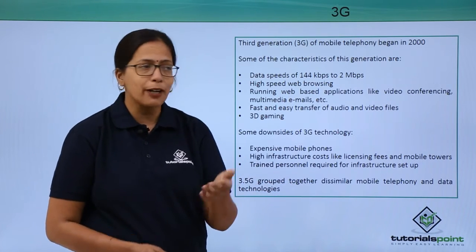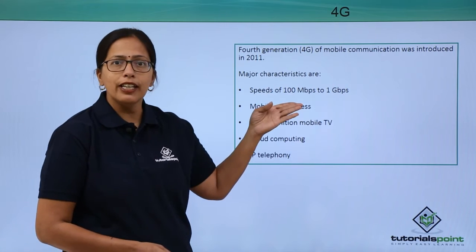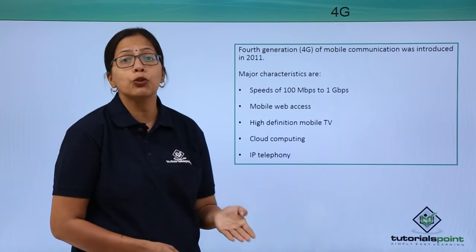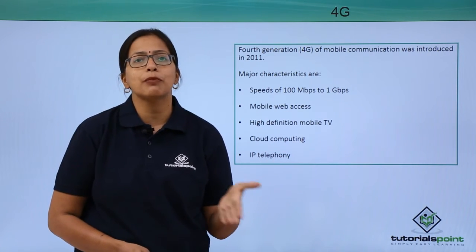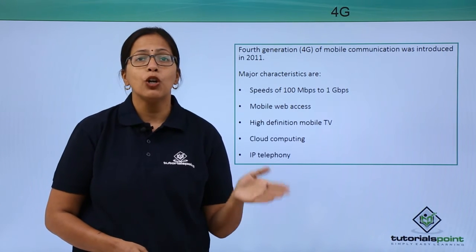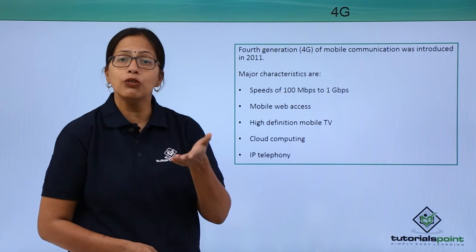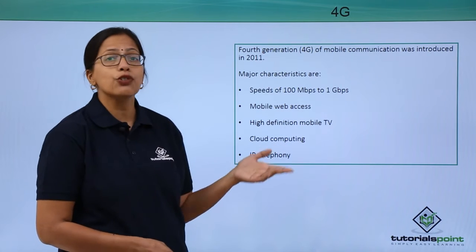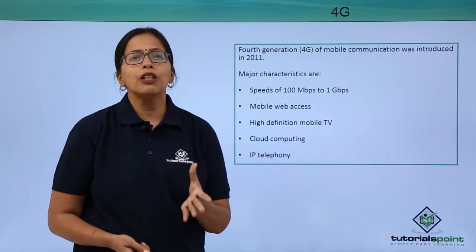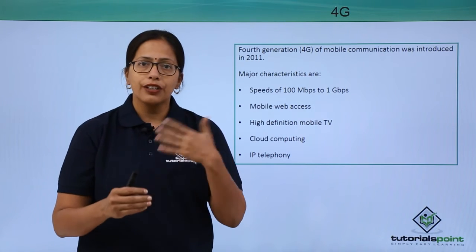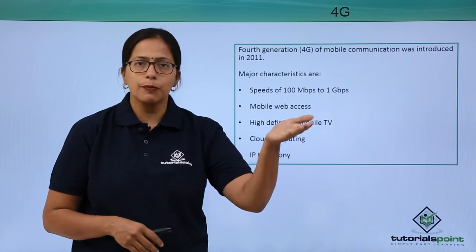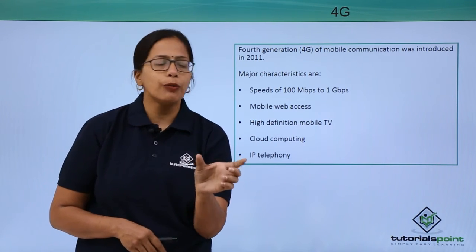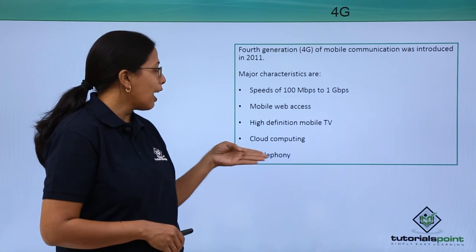After 3.5G, let's come to 4G — very recent, introduced in 2011. We now have speeds up to 1 Gbps. If you remember, in 1G we started from 2.4 kbps, and now we have come up to 1 Gbps. Mobile web access is faster and more secure. High definition mobile TV is now possible — you can watch TV programs on your mobile, or on your smart TV you can watch YouTube videos and other content you're used to on mobile phones.